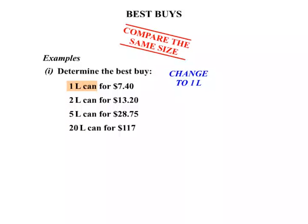The first one is already a 1L can, so we know the price is $7.40 — we don't need to do anything to that. The next one is a 2L can. To work out the price for 1L, we divide by 2. So our price there: $13.20 divided by 2 gives us $6.60.